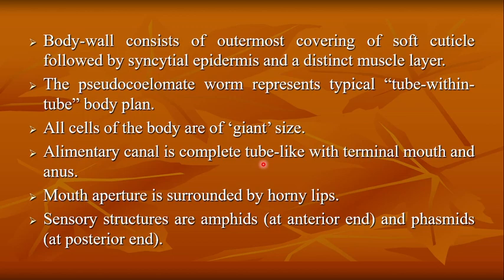The alimentary canal is complete and tube-like with a terminal mouth and anus. In Platyhelminthes, such as Fasciola hepatica, the alimentary canal is incomplete — mouth is present but no anus. In Aschelminthes, however, the alimentary canal is complete, with the mouth at the anterior end and anus at the posterior end.